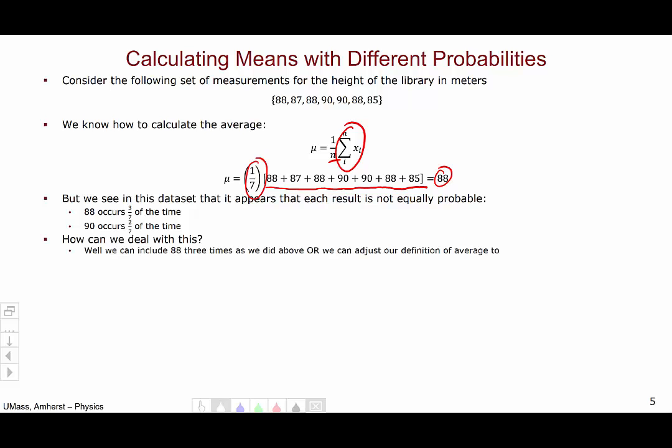Well, we can deal with this as we just did by adding all the numbers up and counting 88 three times, or we can readjust our definition of average to include the idea of probability. In this new definition, we don't just add up the events, we add up the probability multiplied by the value. So we take each value, multiply by the probability, and then add to get our mean.